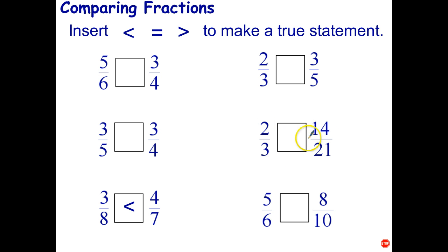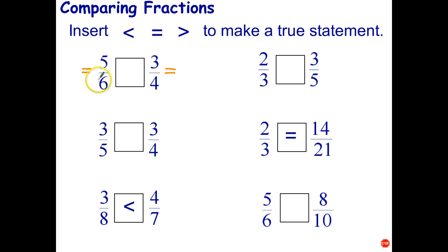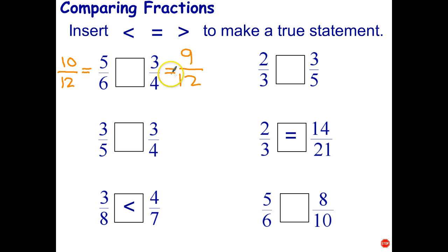Similarly, with two-thirds and 14 twenty-firsts: if I multiply two by seven I get 14, and three by seven I get 21, so those fractions are equal. It only gets trickier when it's not obvious which fraction is largest. For five-sixths or three-quarters, you can turn them both into twelfths: six times two is twelve, five times two is ten, four times three is twelve, three times three is nine. Ten-twelfths is more than nine-twelfths, so five-sixths is greater.